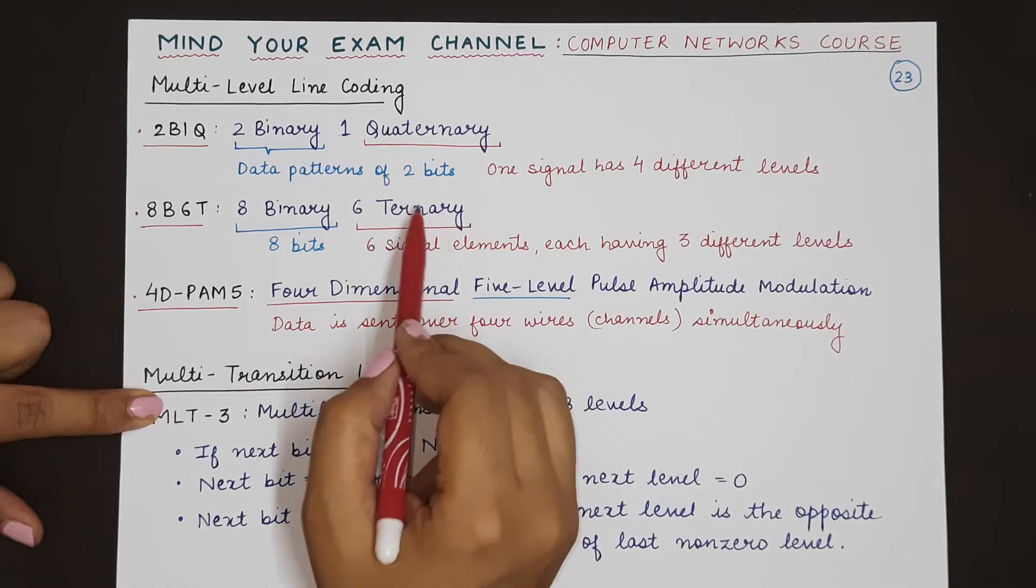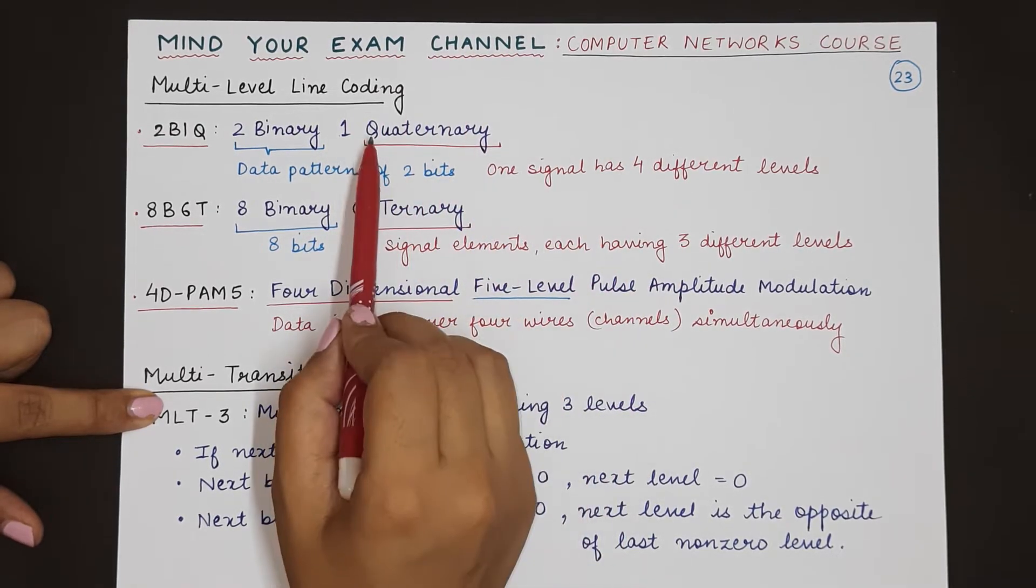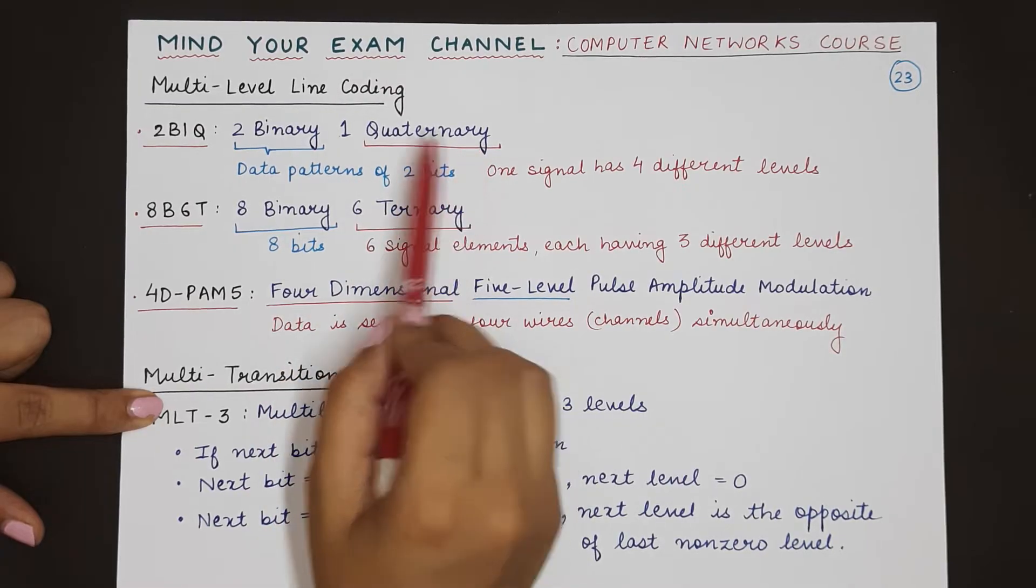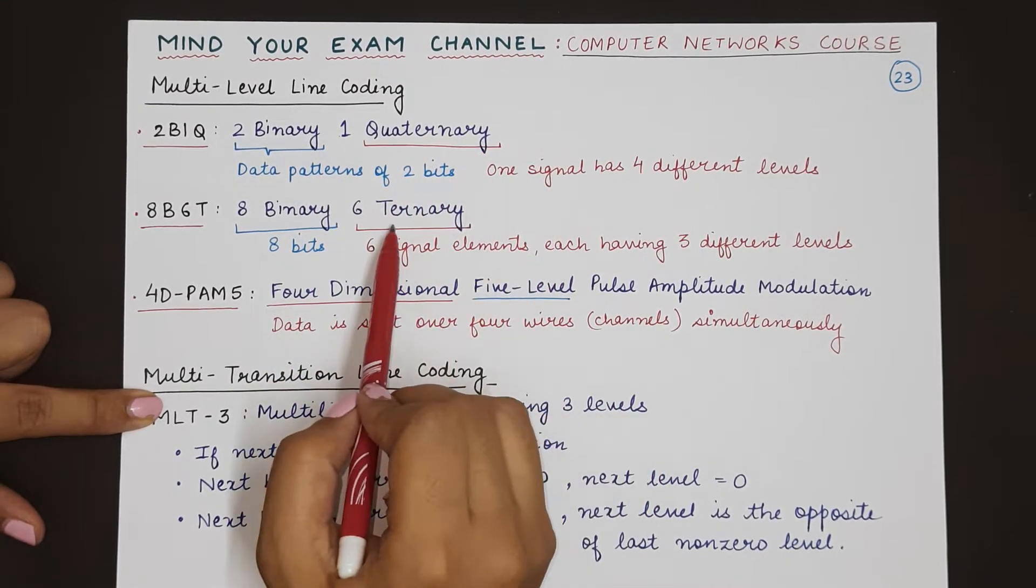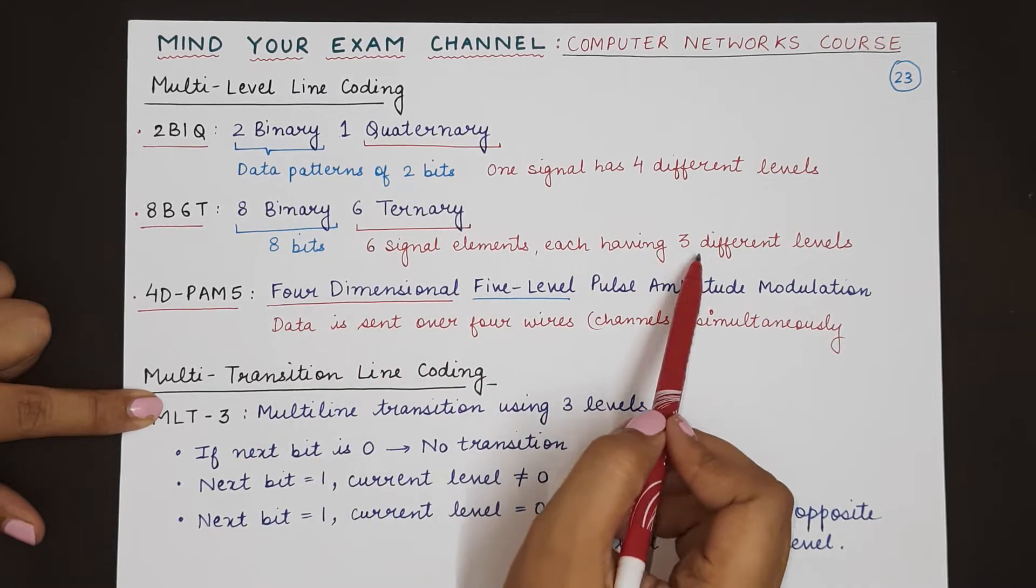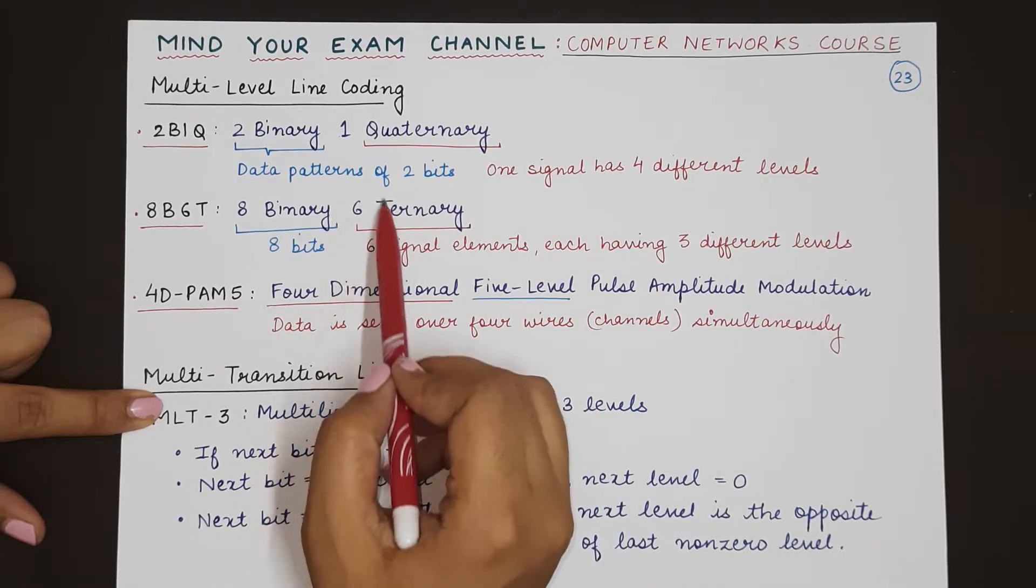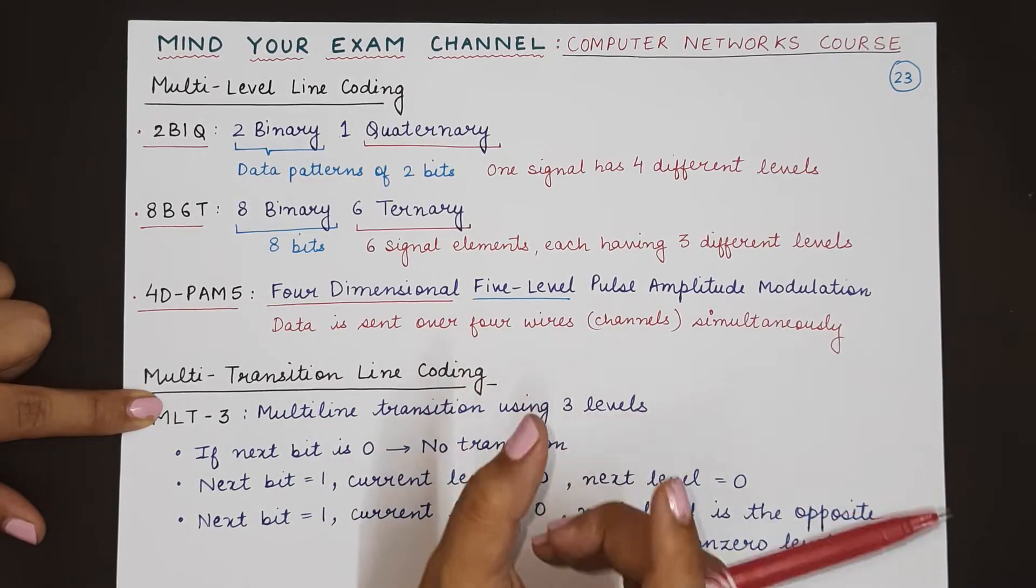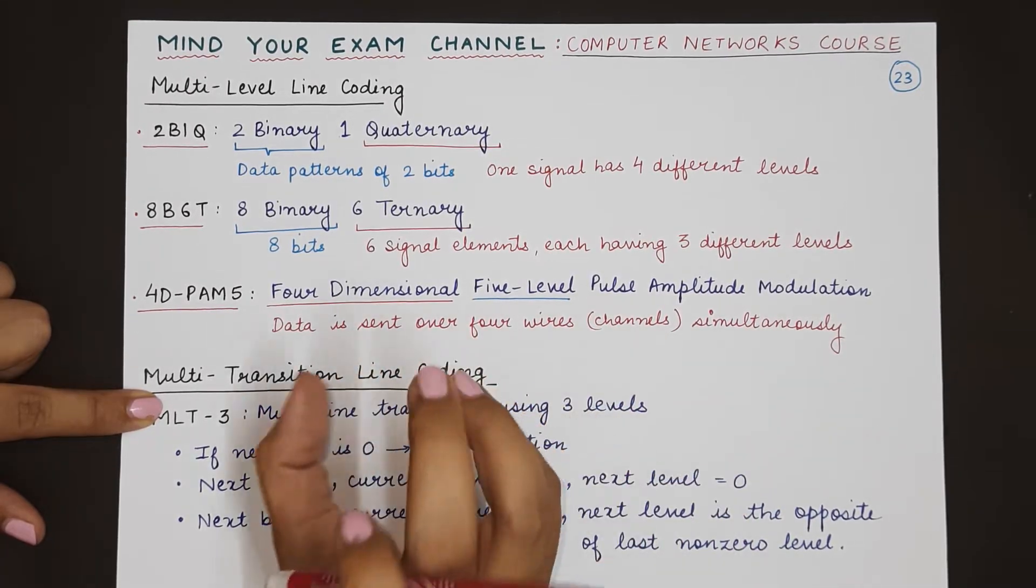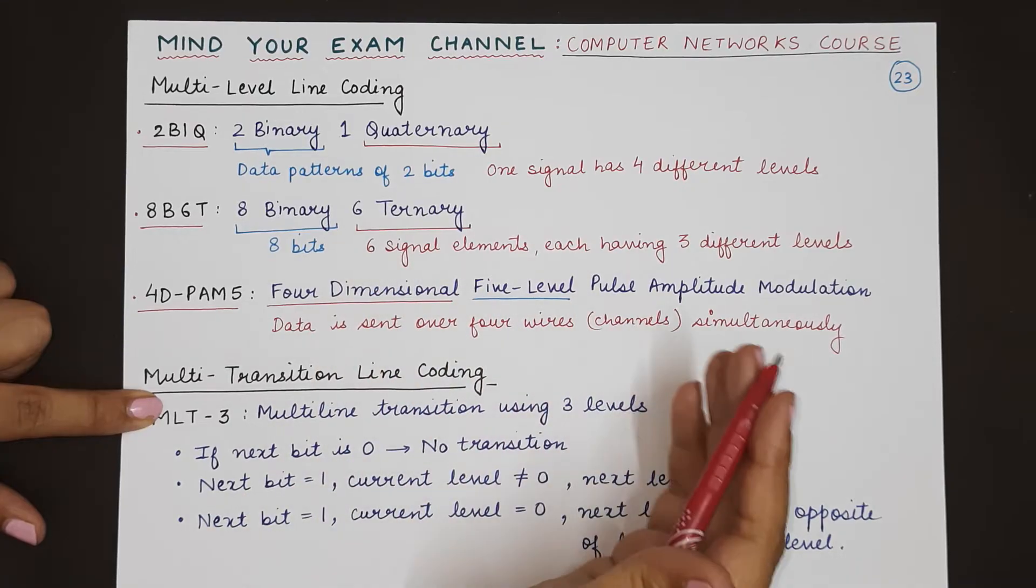Ternary means 3 here; quaternary meant 4. The second word after binary will tell you how many levels there are—here there were ternary, that means there were three different levels in six signal elements. Signal element is the smallest unit of signal that can represent data that can be transmitted over a wire.